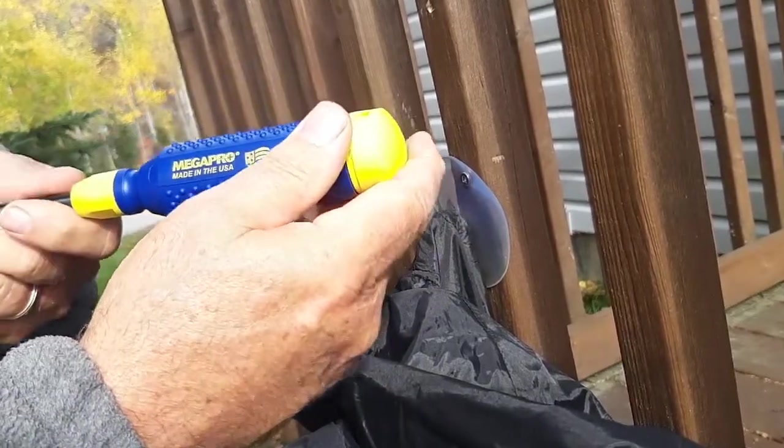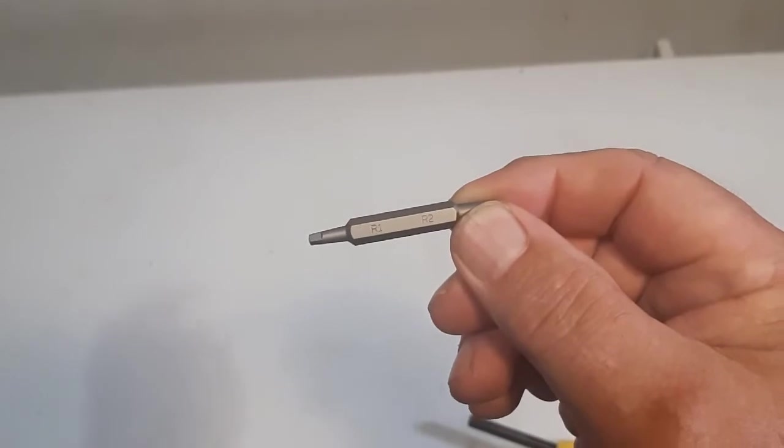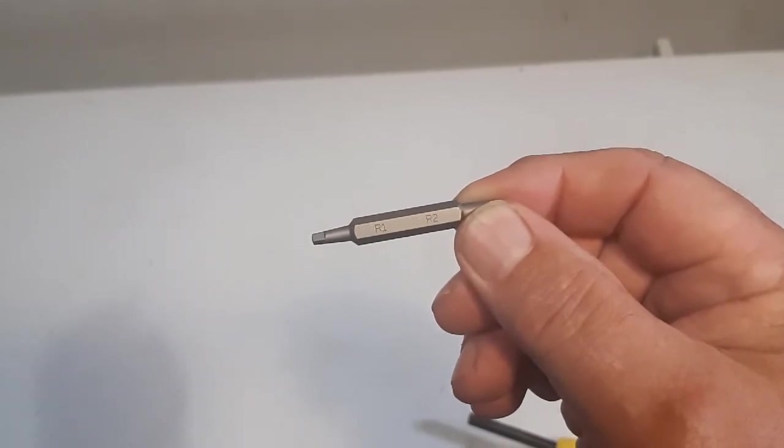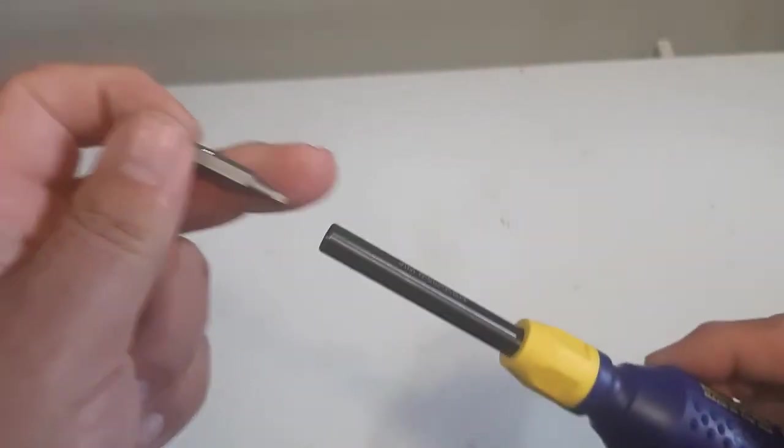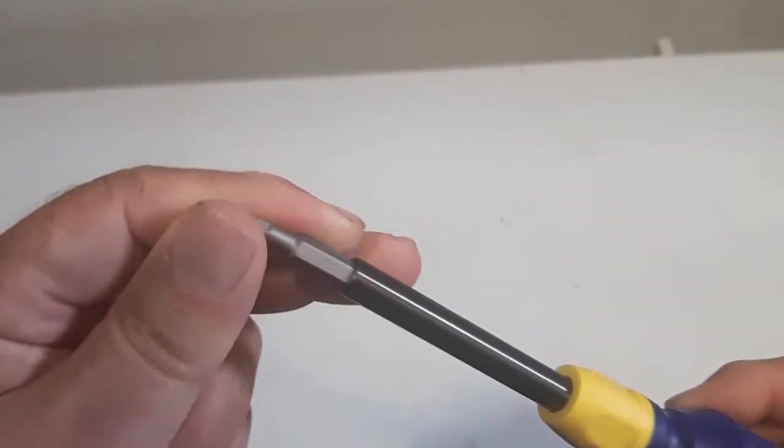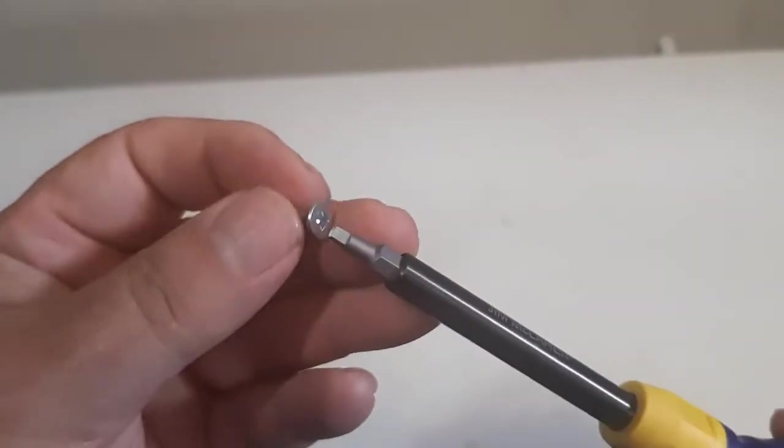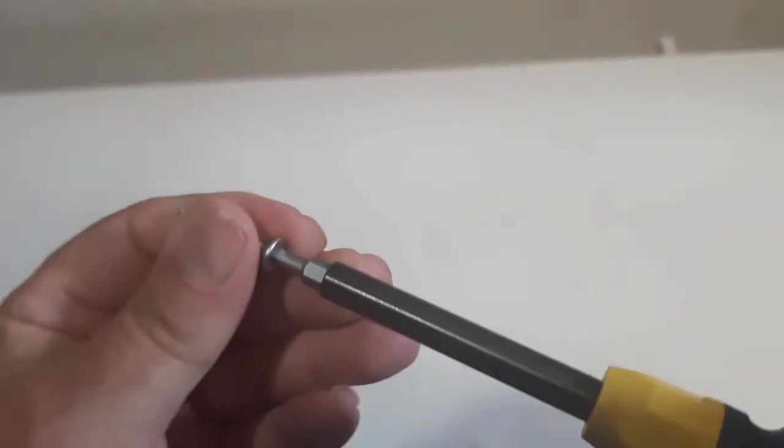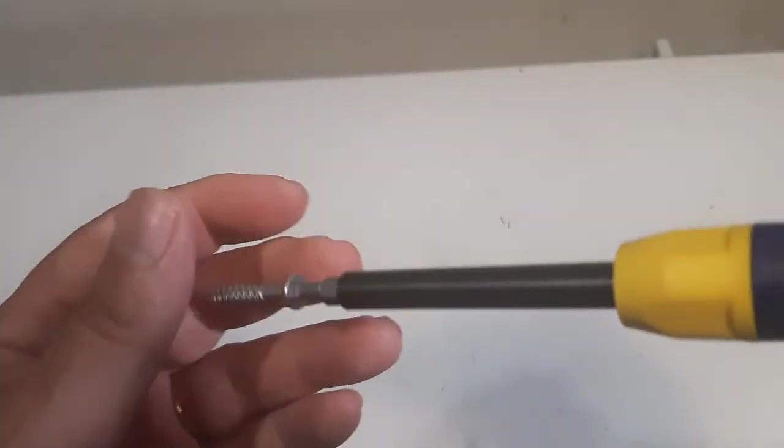Megapro Original. These are quality bits that come with the Original Megapro screwdriver. There's the Robertson 2. The ball bearing holds it inside here, and it fits inside the screw very tightly—very nice fit.